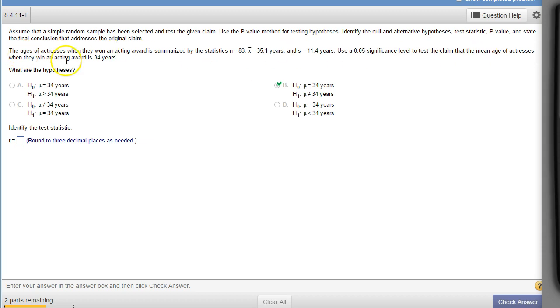It just says test the claim and the mean age of actresses when the award is 34 years. So that's the claim. But we don't know a direction, so we just say not equals and that takes care of greater than and less than.